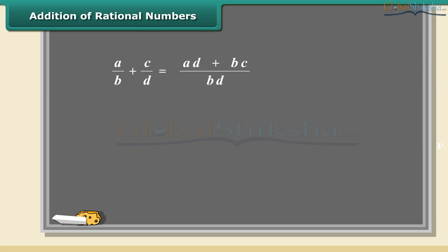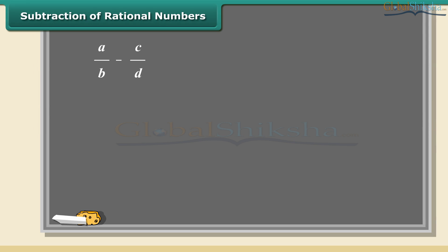Here is an example of addition. We will add 5 by 4 and 1 by 4. See, the denominators are already the same. Now add the numerators and put the answer over the same denominator. This fraction can be further simplified to 3 by 2.